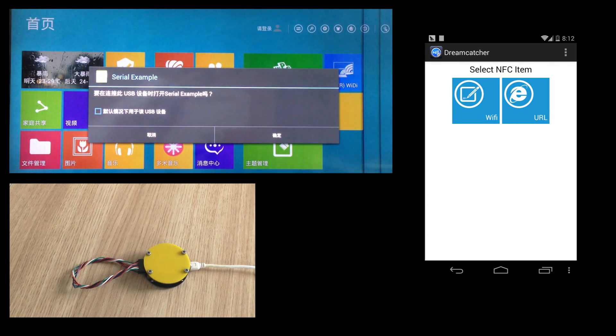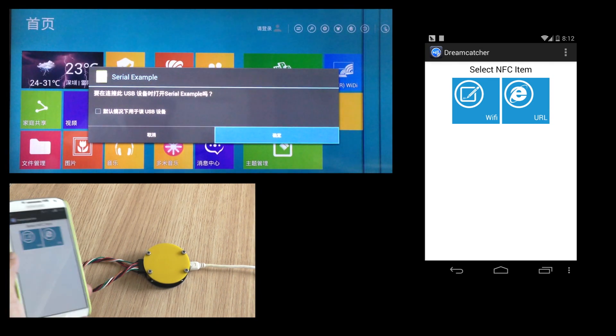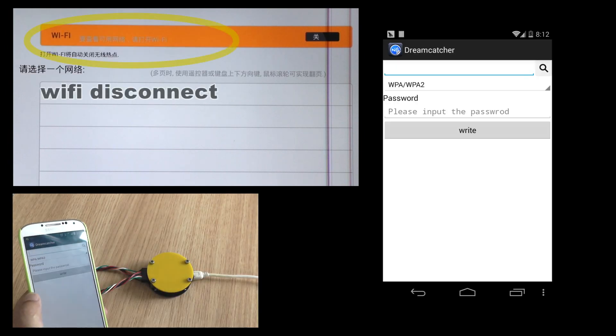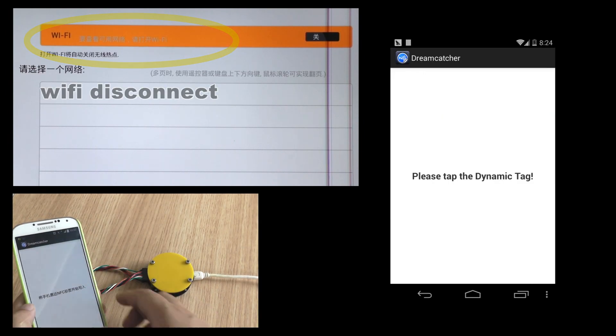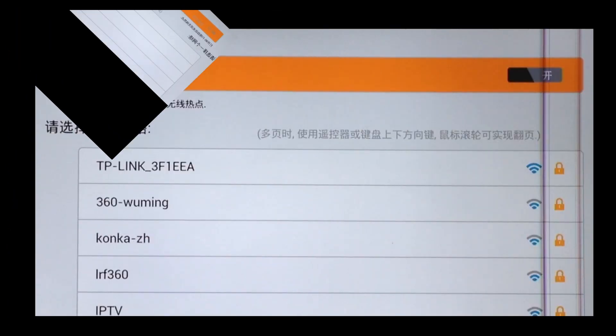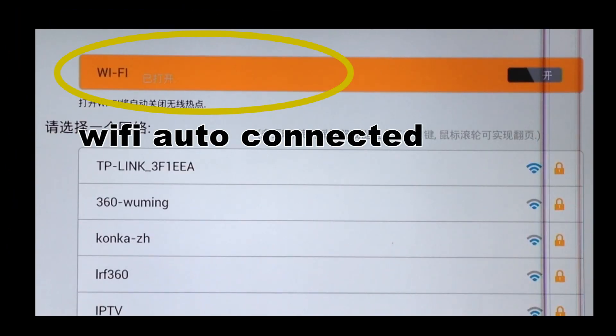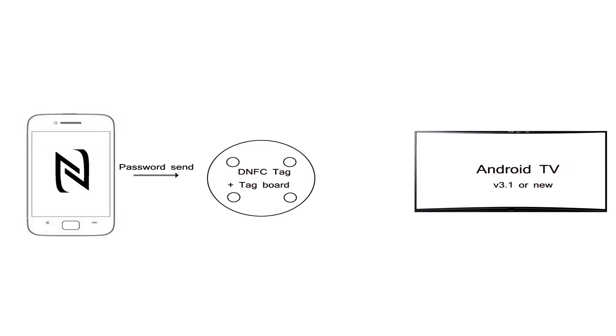To begin with, we install two apps into the Android TV: NFC app and serial monitor app. Enter the app Dreamcatcher on your phone, select Wi-Fi and register. Get the phone close enough to the tag and share the password.